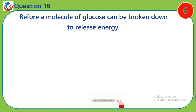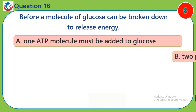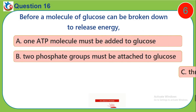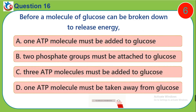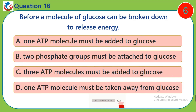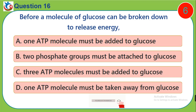Question 16. Before a molecule of glucose can be broken down to release energy: A. One ATP molecule must be added to glucose. B. Two phosphate groups must be attached to glucose. C. Three ATP molecules must be added to glucose. D. One ATP molecule must be taken away from glucose.